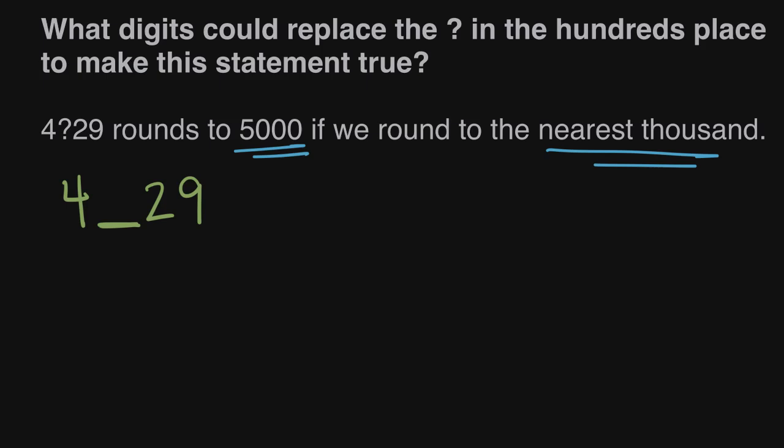Well the only other thousand this could be close to is 4,000 because we're starting with a four here. All of our numbers will be between 4,000 and 5,000. So let's draw that, let's show that on a number line. Here's a number line that goes from 4,000 to 5,000 and then the hundreds here are marked. So this would be 4,100, 4,200, 4,300, 4,400, so on all the way to 4,900 and then finally 5,000.